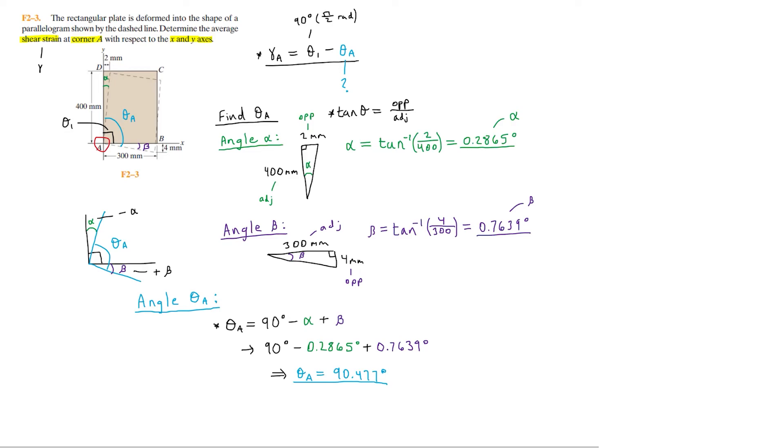Now that we finally know the angle theta A, we can solve for the shear strain at corner A, which is gamma A equals 90 degrees minus theta A, which is 90.477 degrees. That gives us negative 0.477 degrees. Converting this into radians for our final answer, we simply multiply this by pi over 180 degrees. Hence, the shear strain gamma A at corner A equals negative 0.00833 radians.